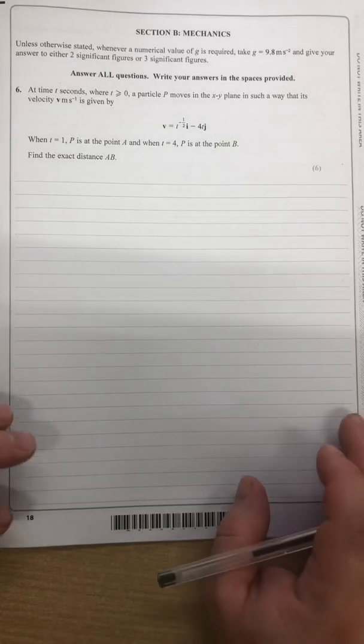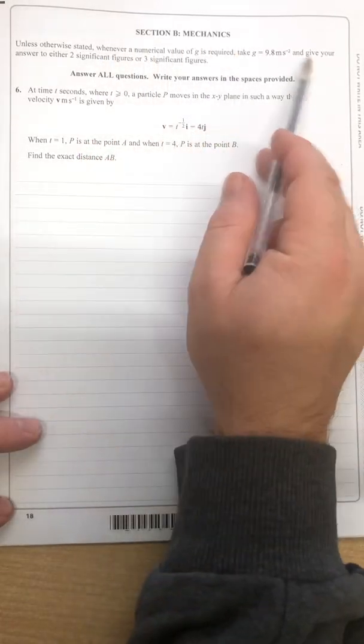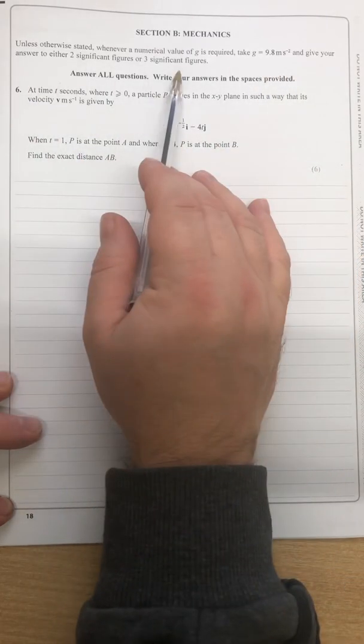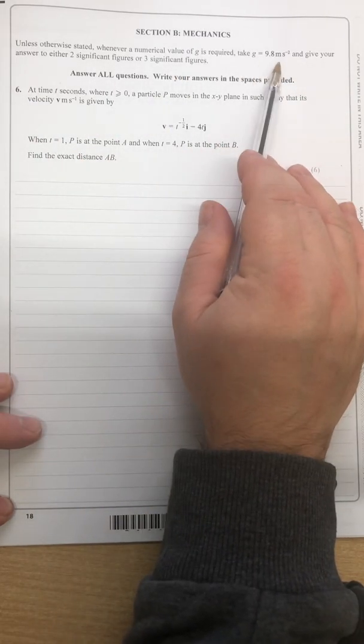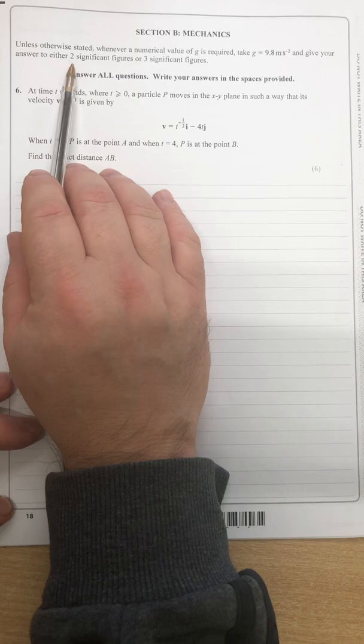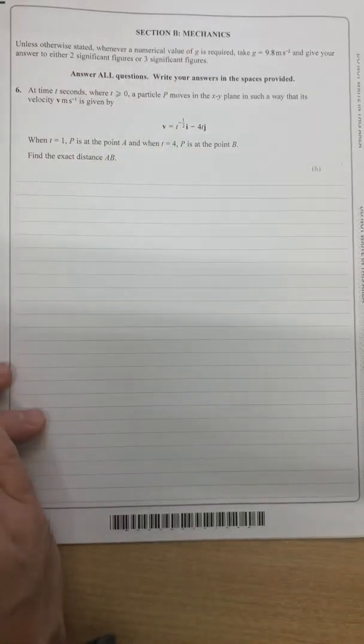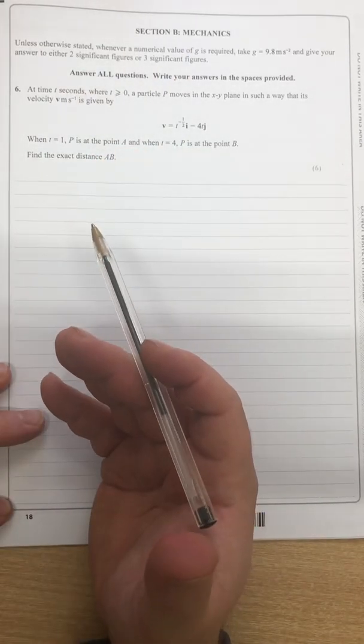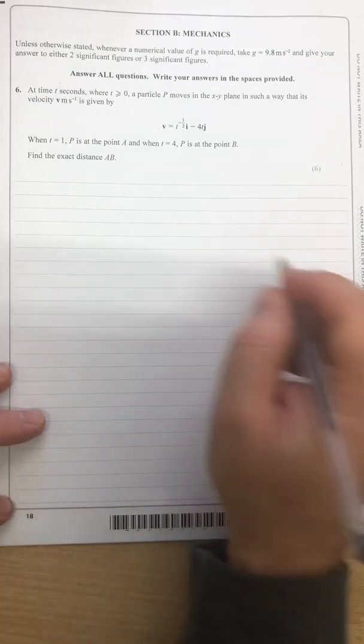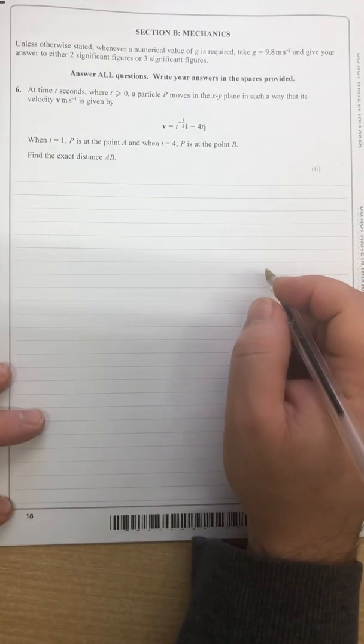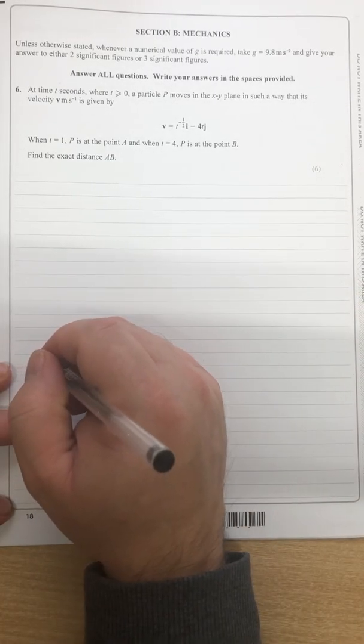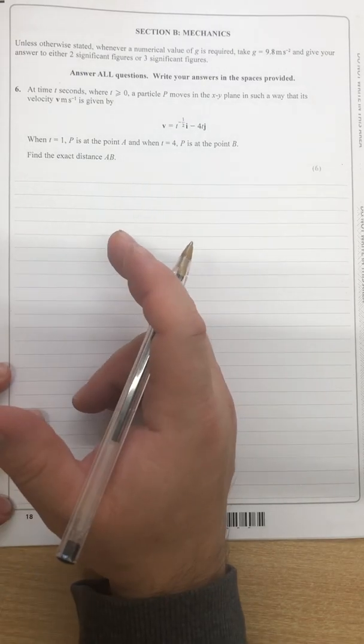Mechanics paper question six. I'm just taking in this information which is at the front of the mechanics paper, G equals 9.8 which is expected. Also your answers are either two significant figures or three significant figures. But as I've often said, write out everything on your calculator display if you can at the end and then do the rounding after and then you've got all bases covered.